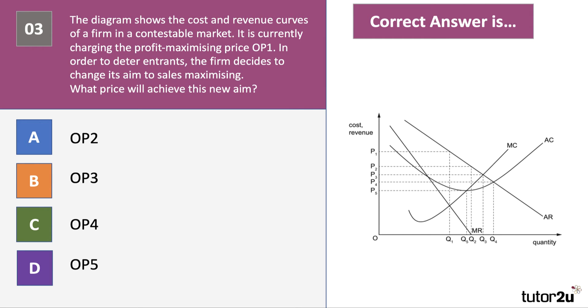So profit maximisation of course is where marginal cost meets marginal revenue. That will be an output of Q1 giving a price of P1. Sales maximisation is where you achieve the highest output possible consistent with making at least normal profit. In other words breaking even,